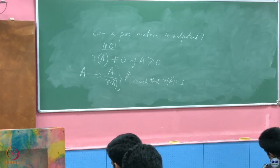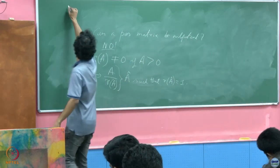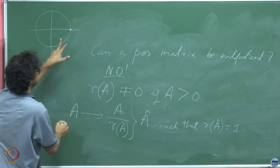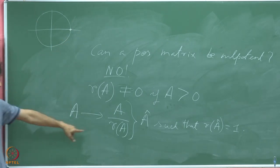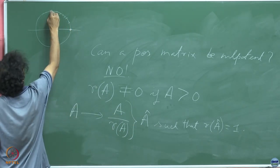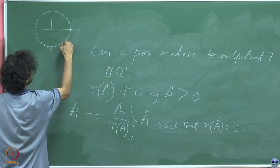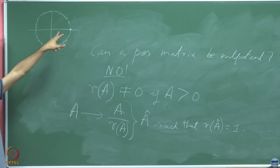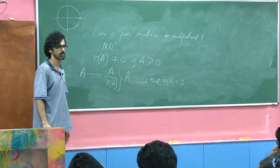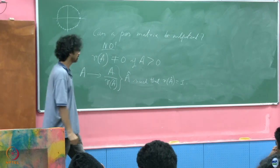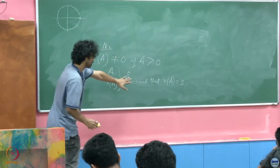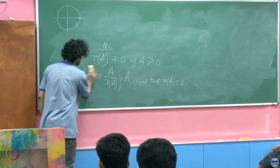None of the other points on the complex plane will ever yield another eigenvalue — that is what I claimed. So now it is time to show why that must be so. We are going to talk about Â hereafter — the normalized positive matrix. Suppose |λ| = 1 and Â x = λ x, where Â is a positive matrix with r(Â) = 1.